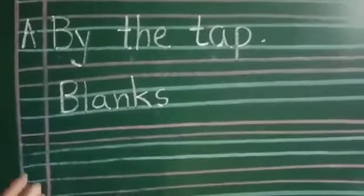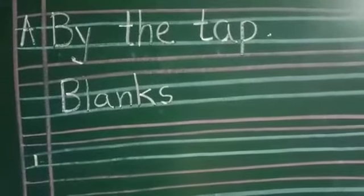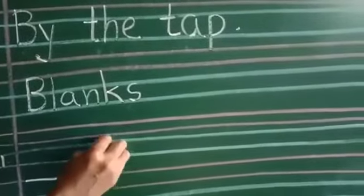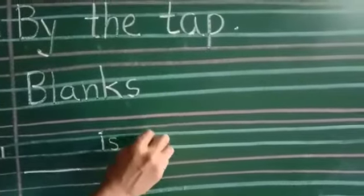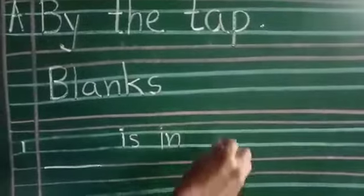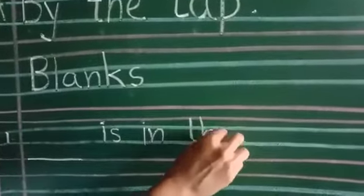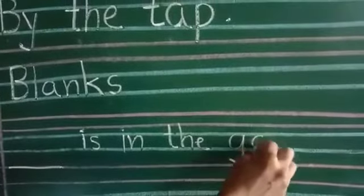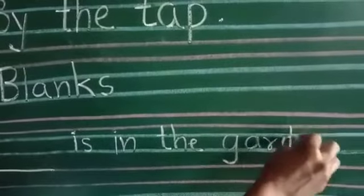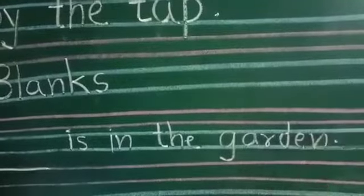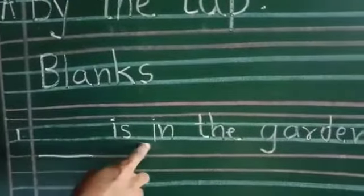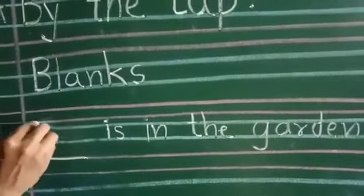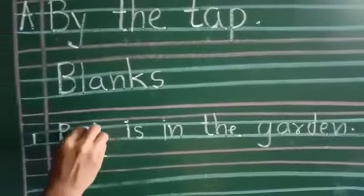Write here number 1. Dash I-S, is, I-N, T-H-E, the, G-A-R-D-E-N, garden, full stop. Dash is in the garden. Right here capital P-A-T, Pat.